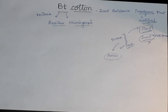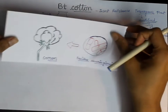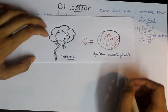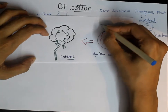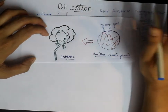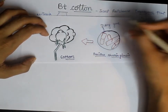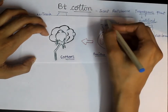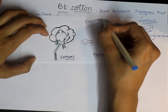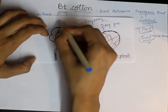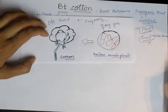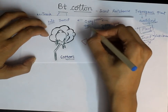We take a bacteria called Bacillus thuringiensis. This bacteria has a gene present in it called the cry gene. What is the cry gene? It forms a cry protein. This cry protein is able to kill an insect. We can say the cry protein is a toxic protein.